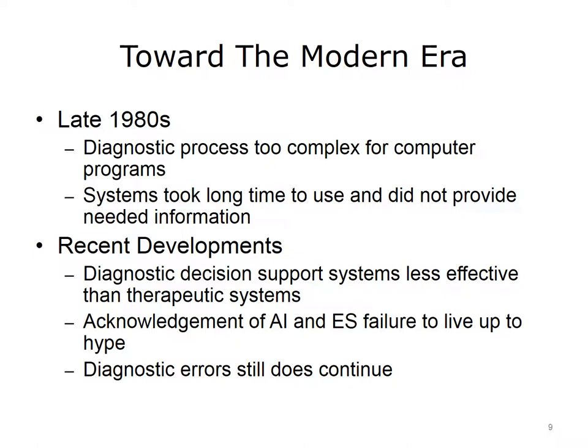A great deal of work took place in the 1960s, 1970s, and 1980s in diagnostic decision support; it was believed that was where medical informatics would have its biggest impact. In the late 1980s, however, it became apparent that the diagnostic process was too complex for computer programs, and that these systems took too long and did not provide the information clinicians truly needed. Recent developments support the idea that diagnostic decision support systems are less effective than therapeutic systems. There was a general acknowledgment of the failure of expert systems and AI to live up to the expectations of the 1980s—not only in medicine but in other areas. However, diagnostic errors still occur and cause harm to patients, so this problem still needs to be resolved.